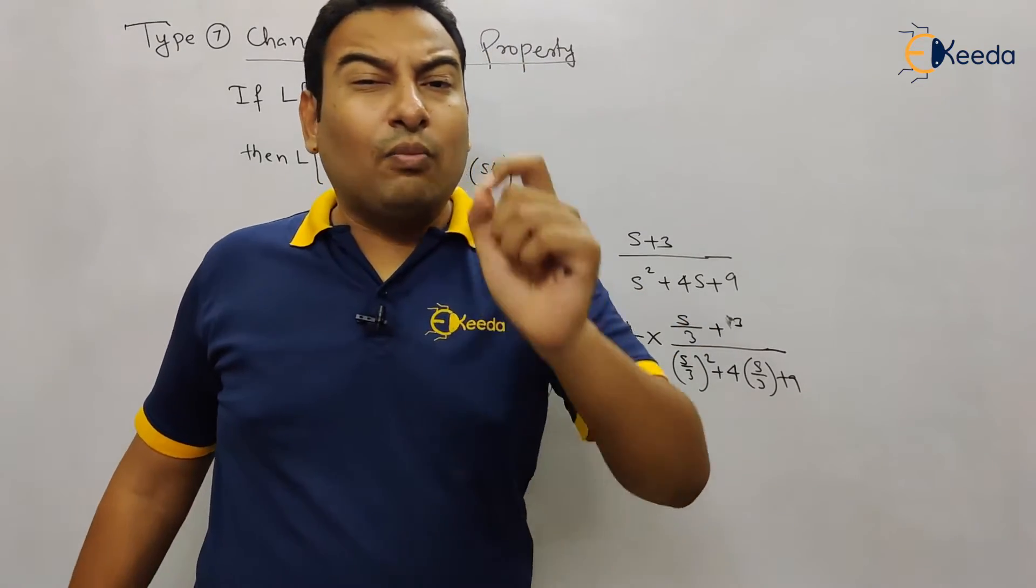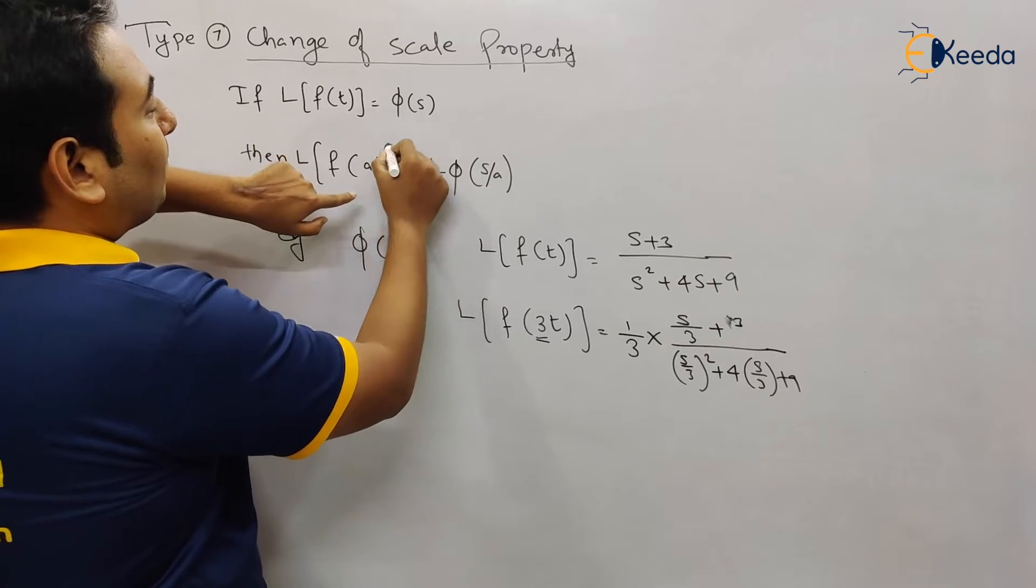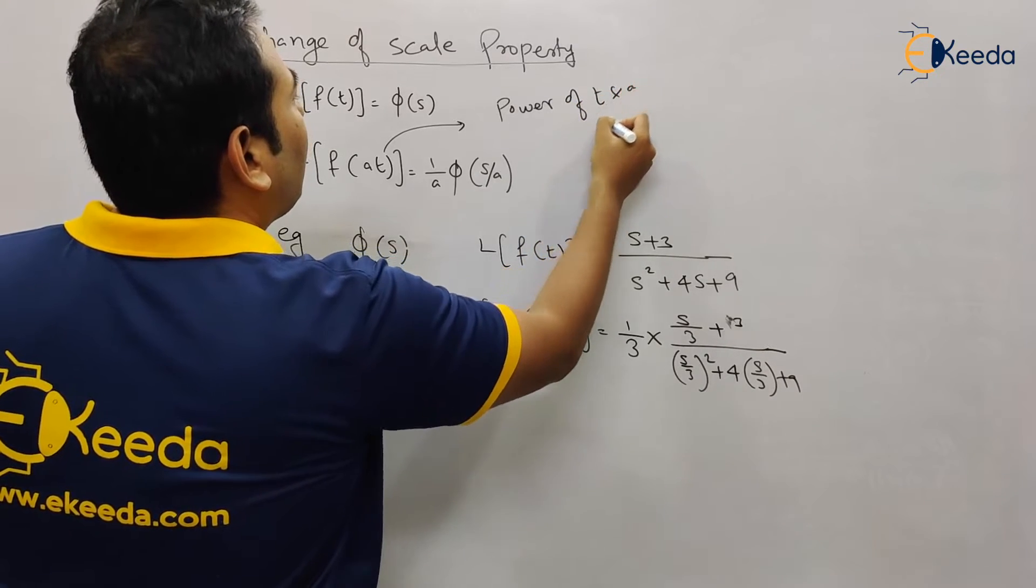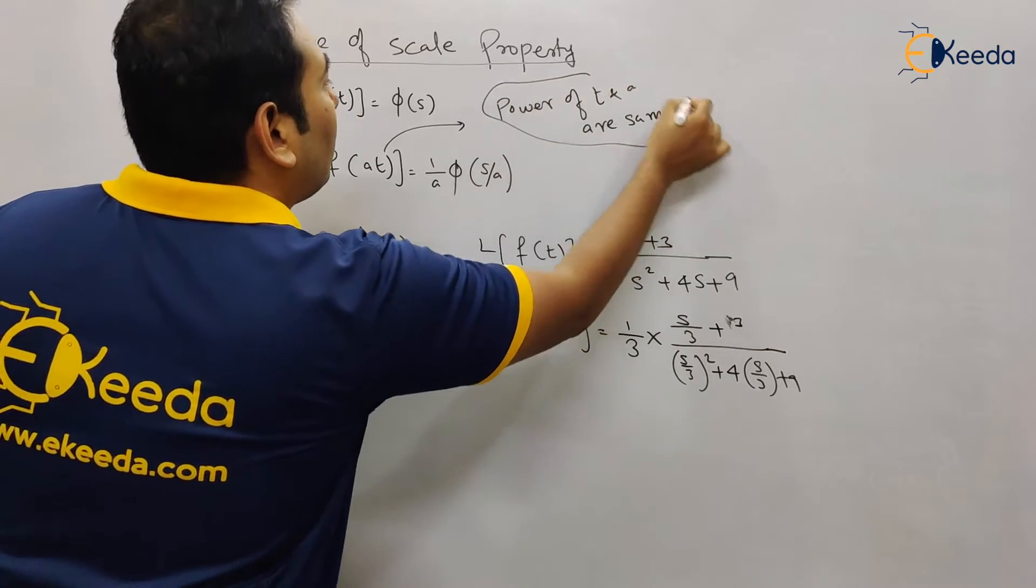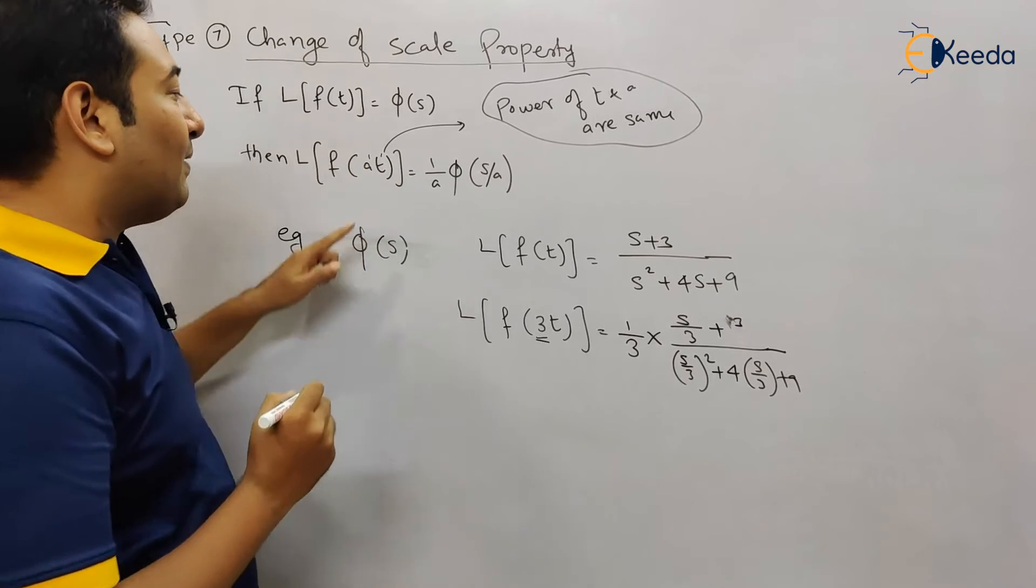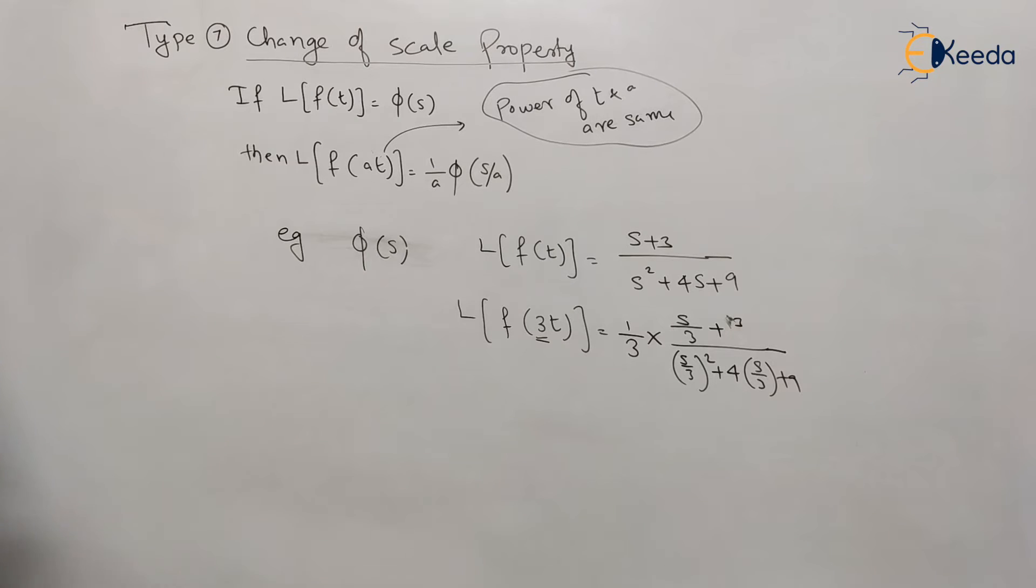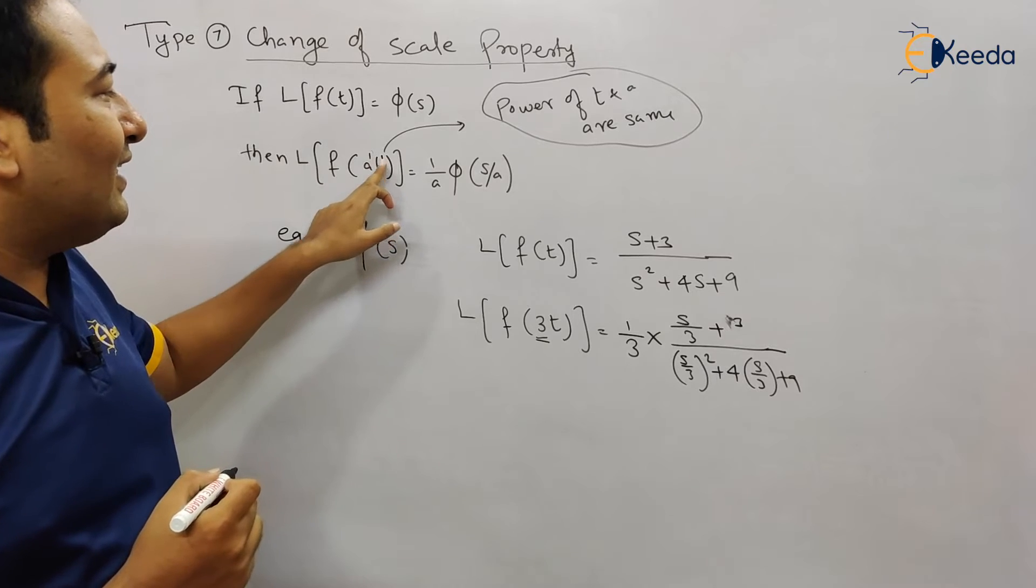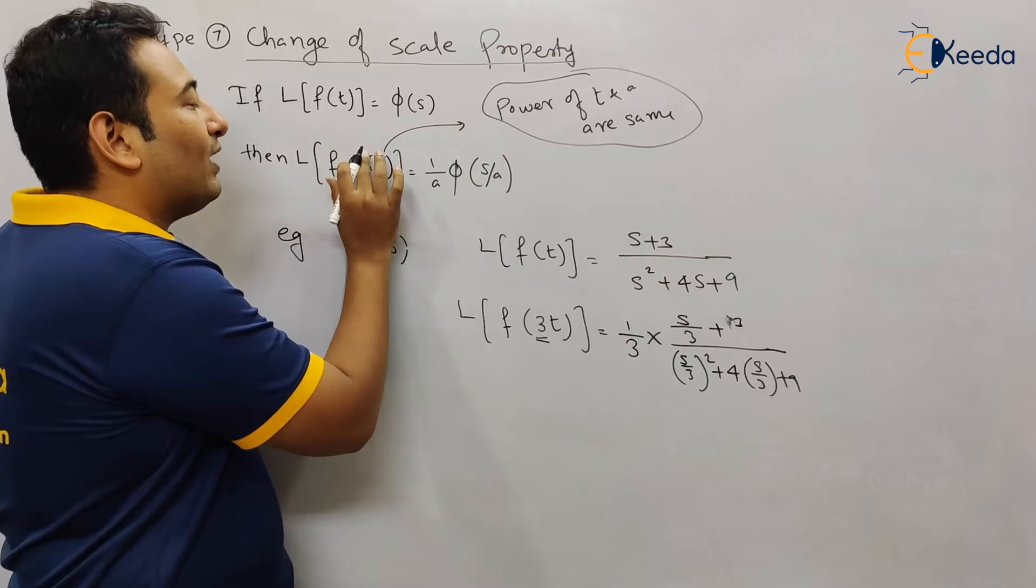One of the most important points that you need to note is: power of a and t are same. Please make a note of it. This is a very important point. See here, a's power is 1 and t's power is 1. The powers should be same. If it is t², then it will be a². If a is raised to 1, then t is raised to 1. Suppose it is square, then both should be square, and so on.